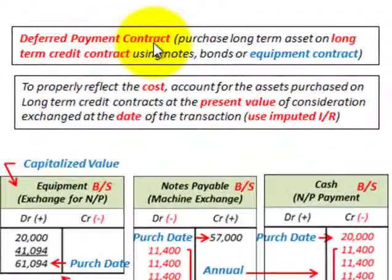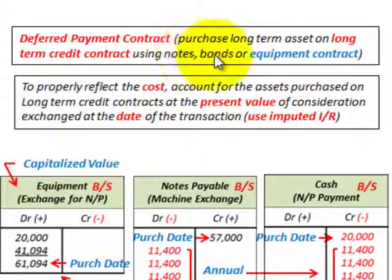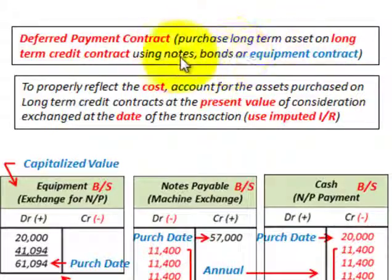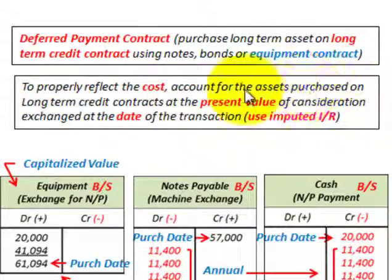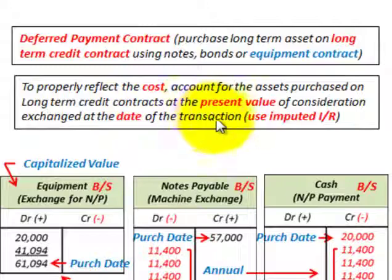Here we're going to be looking at a deferred payment contract for purchasing long-term assets on a long-term credit contract using either notes, bonds, or equipment contracts. We have to properly reflect the cost to account for assets purchased on these long-term credit contracts. They're recorded at the present value of the consideration exchanged at the date of the transaction, and we use the imputed interest rate.